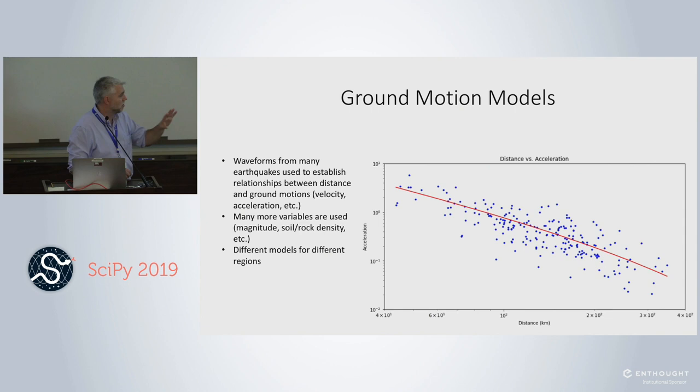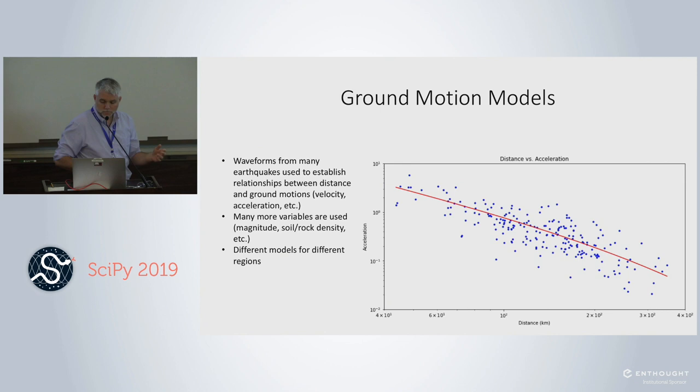You use a lot more variables for this — grouping by magnitude, looking at site effects like material density at the station — but in a hand-wavy way, you fit a curve to the data and that's your model. It's more complicated in practice, with different models for different regions and tectonic regimes: subduction zones like Cascadia, Japan, or Chile, versus active tectonic regions like California.